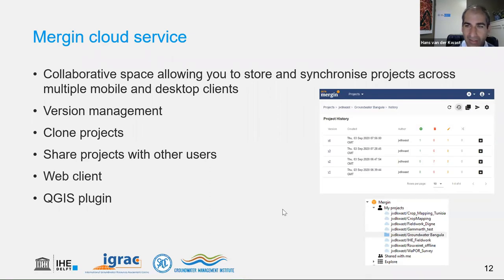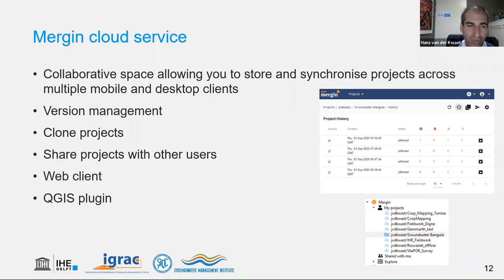Mergin is a great collaborative space where you can log in together with people from your project and share your QGIS projects. It has version management that works very well — if you use geopackages, you can see different versions and roll back to older ones. You can easily clone projects, and if other team members are registered in Mergin, you can share projects with them by username. It comes with a web client and a QGIS plugin for synchronizing projects with the cloud.